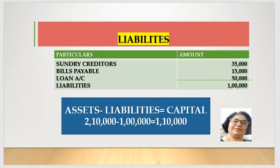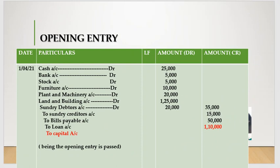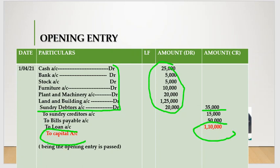Now what we have is the journal entry format. Individually, cash account and bank account debit with their respective amounts, stock account debit, furniture account debit, plant and machinery debit, land and building debit - these are our assets - individually put into the debit column with respective amounts. Then we credit sundry creditors, bills payable, loan account, and the balancing figure capital account, in the credit column. The total is equal to both sides, and we write in the narration 'being opening entry passed.'